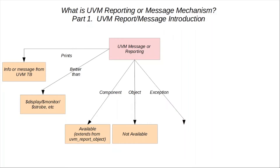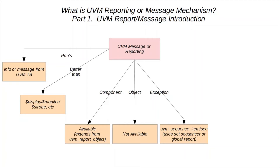There are a few exceptions in terms of some objects which can do reporting. Even though UVM sequence items and UVM sequences are of type UVM objects and not UVM components, they still have methods available for reporting messages. This is done by utilizing the associated sequencer. If a particular sequencer has been associated or set for a sequence, the reporting mechanism of that particular sequencer gets used. Otherwise, the global reporter available from the top testbench can be used to do the reporting.